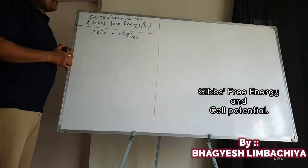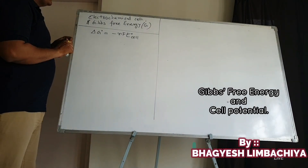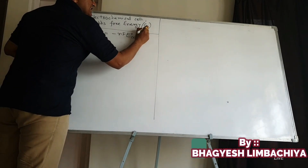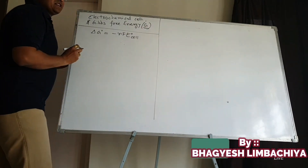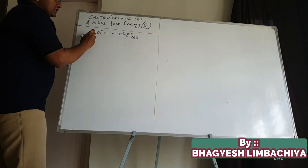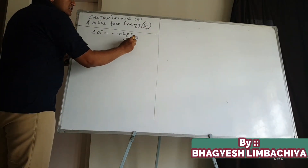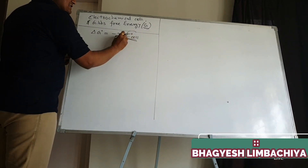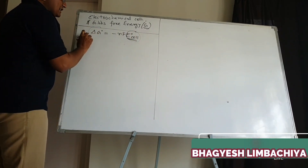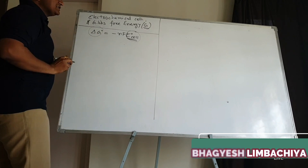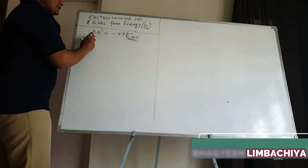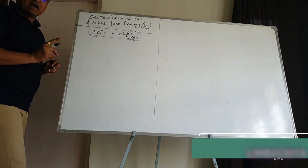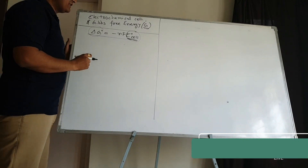Electrochemical cell and the Gibbs free energy. Free energy has symbol capital G. The electrochemical cell has a potential E⁰cell which is related to ΔG⁰. The formula is: ΔG⁰ = −NFE⁰cell.